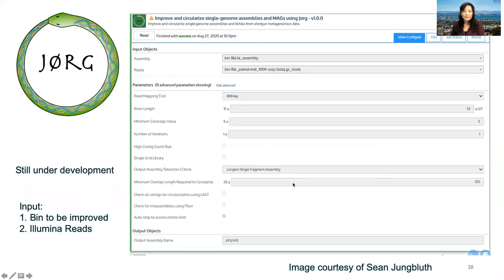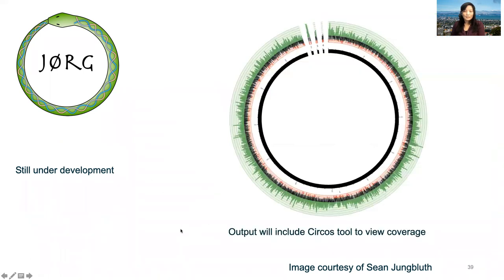Yorg is not quite finished yet — Sean is still working on it. The input is the bin to be improved and the Illumina reads from the original assembly. Sean is also implementing Circos so you can visualize the coverage of your bin after finishing it.